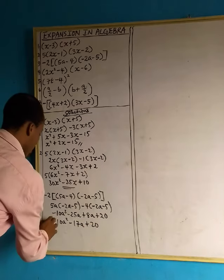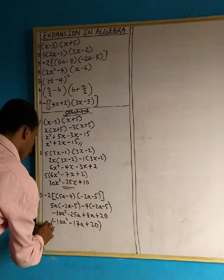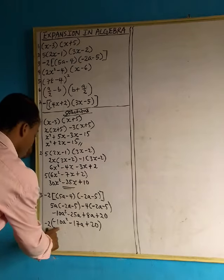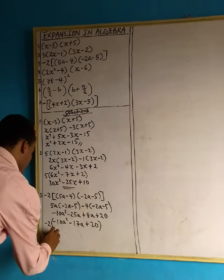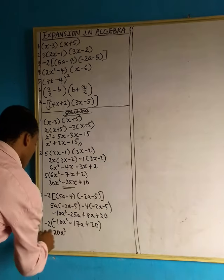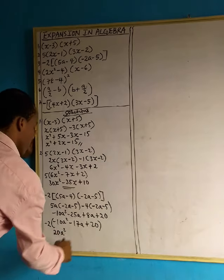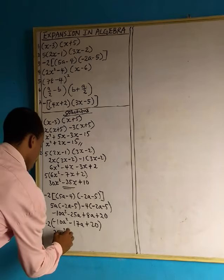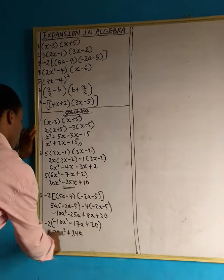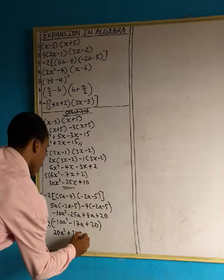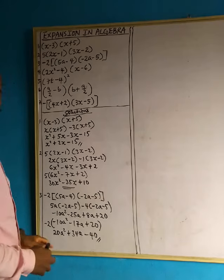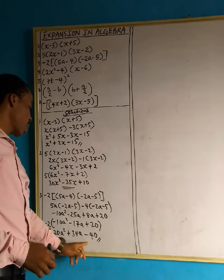Now let's multiply this value by minus 2, which we had at the start — we didn't throw it away. Minus 2 multiplied by minus 10a squared turns to positive, giving us 20a squared. Minus 2 multiplied by minus 17a turns to positive, giving us plus 34a. Minus 2 multiplied by positive 20 gives us minus 40. So our final answer is 20a squared plus 34a minus 40.